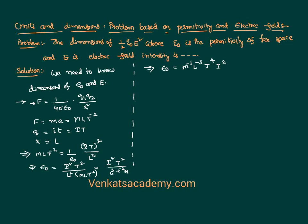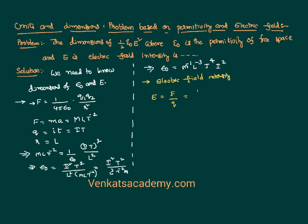Now I also need the dimensions of electric field intensity E. The definition of electric field intensity is the force experienced by a unit positive charge placed in the field, so E = F/q. The dimension of F is M L T⁻² and the dimension of charge q is I T, so E has dimensions of M L T⁻³ I⁻¹.